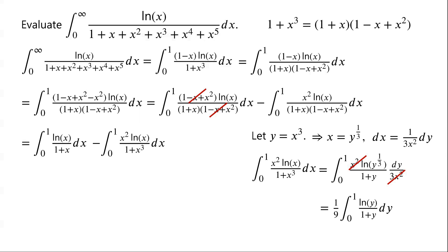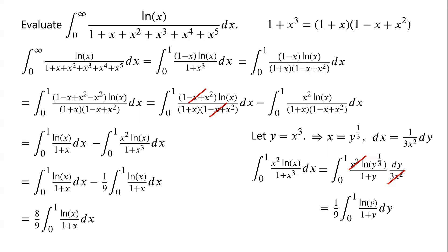The original integral can now be written as the integral from 0 to 1 of ln(x) over (1 plus x) dx, minus (1/9) times the integral from 0 to 1 of ln(x) over (1 plus x) dx, which equals (8/9) times the integral from 0 to 1 of ln(x) over (1 plus x) dx.